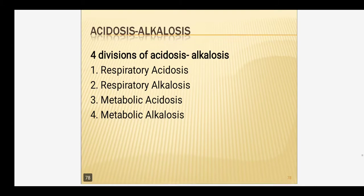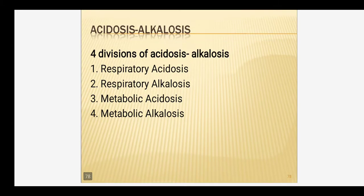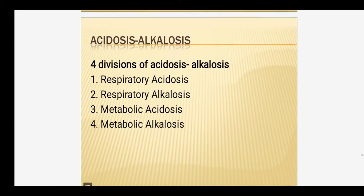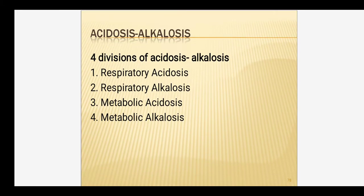There are four divisions of acid-base imbalance. Four different types: one is respiratory acidosis, second is respiratory alkalosis, third is metabolic acidosis, and fourth is metabolic alkalosis. Let us see them one by one.